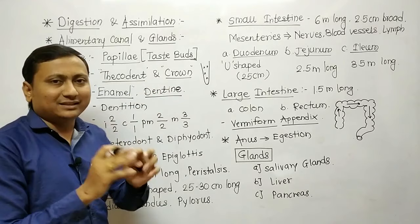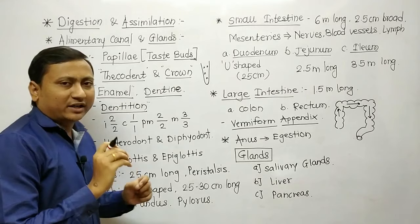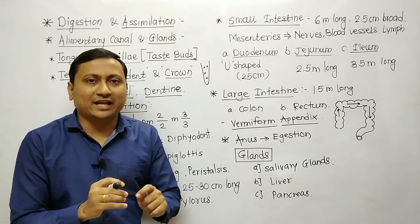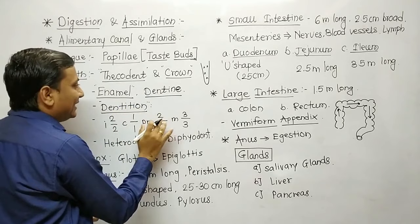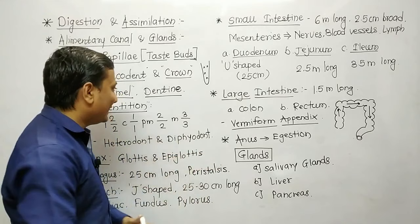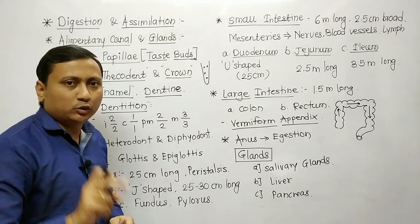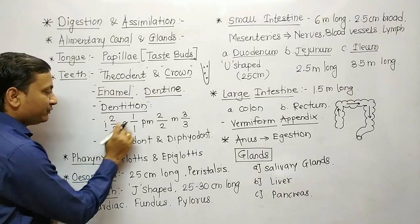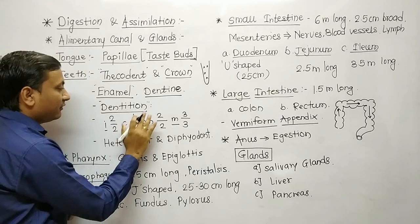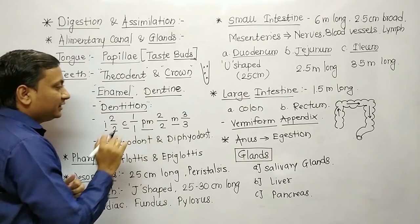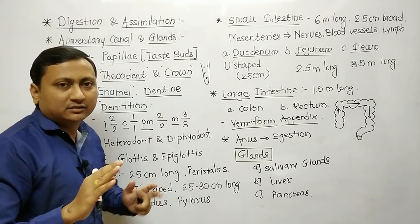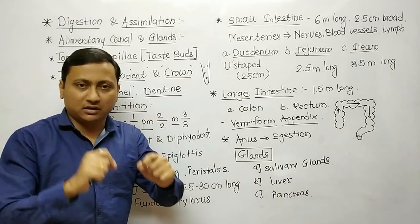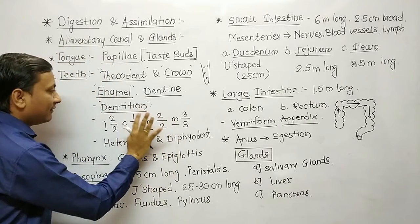Dentition is the study of teeth with respect to their number, arrangement and development. The dental formula is: I 2x2, C 1x1, PM 2x2, and M 3x3. Here I is incisor, C is canine, PM means premolar, and M means molar. These are the various types of teeth present in our buccal cavity. This dental formula is very important.